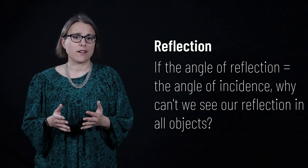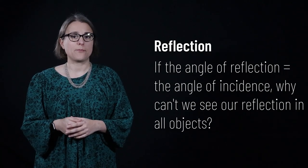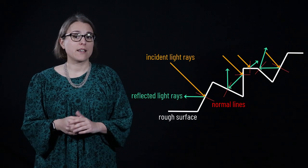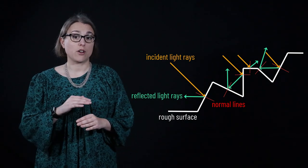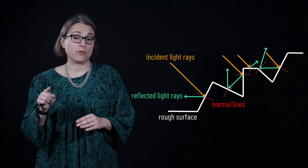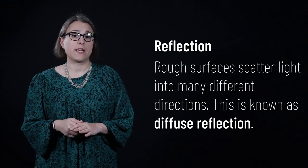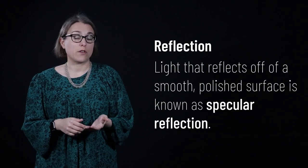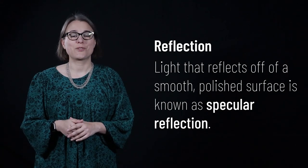Selective reflection is how different objects appear to look different colors. But if reflection is occurring, why can't we see our reflection in objects that allow light to bounce off them? The answer is that, while light always obeys the law of reflection, sometimes surfaces are rough enough that light will bounce back in scattered directions. This is known as diffuse reflection. Light that bounces off a smooth, polished surface such as a mirror is known as specular reflection.